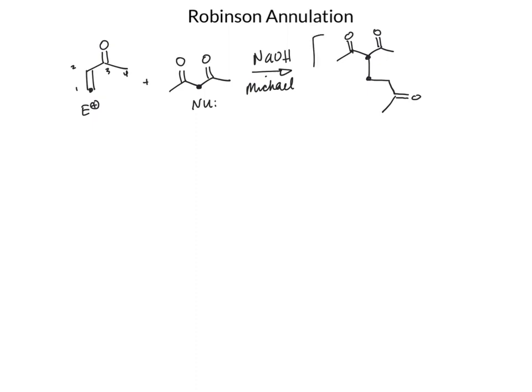But after the Michael, the reaction does not stop here, because under our basic reaction conditions, this can continue. We are now set up to do a second reaction — an aldol condensation. The aldol is going to happen because we have a new alpha carbon as our nucleophile that is one, two, three, four, five, six atoms away. There's our magic number — six atoms away from an electrophilic carbon, a carbonyl. And when we have an alpha carbon attacking a carbonyl carbon, then we call that an aldol reaction.